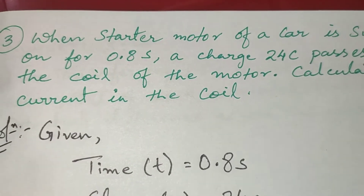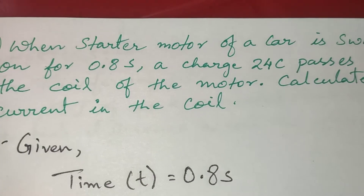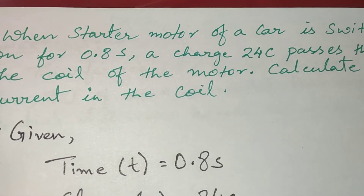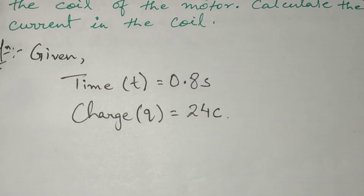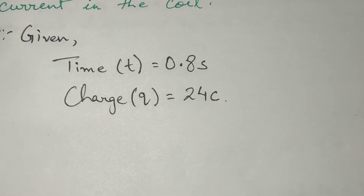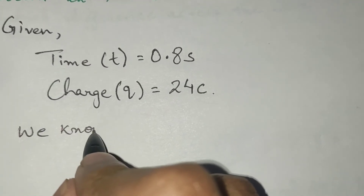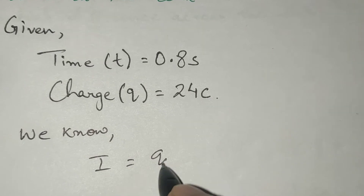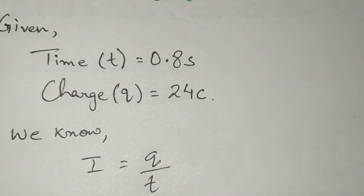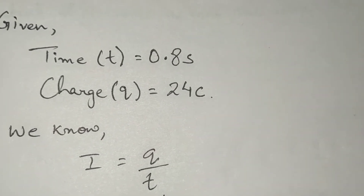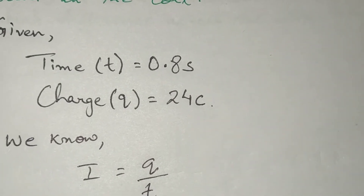Now we go to the third question, which says: when the starter motor of a car is switched on for 0.8 seconds, a charge of 24 Coulombs passes through the coil of the motor. Calculate the current in the coil. Given: time is 0.8 seconds, charge Q is 24 Coulombs. Using I equals Q upon T, the value for Q is 24 divided by 0.8, so we get 30 ampere.